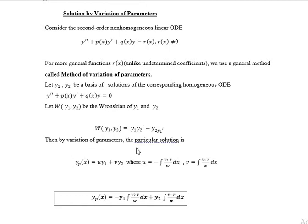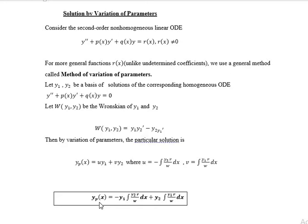By variation of parameters, the particular solution is yp(x) = u·y1 + v·y2, where u = −∫(y2·r / W) dx and v = ∫(y1·r / W) dx.